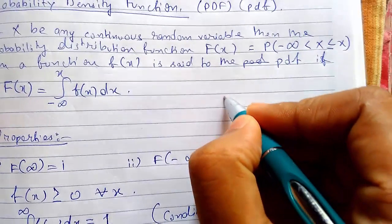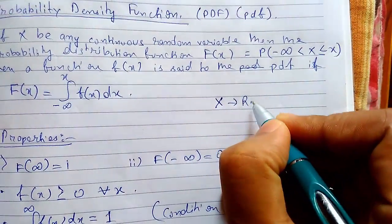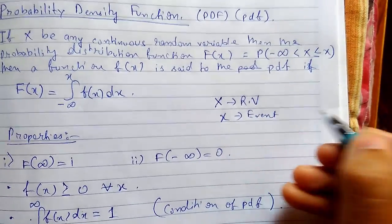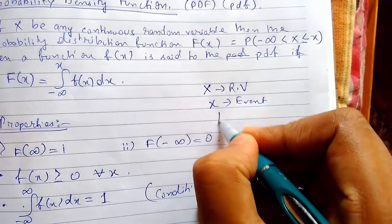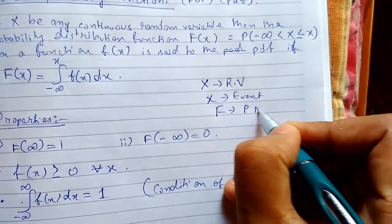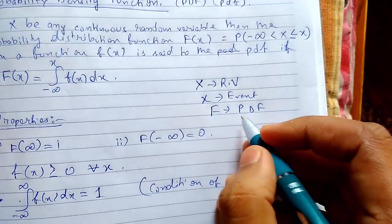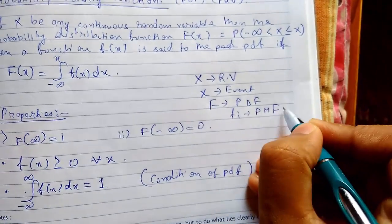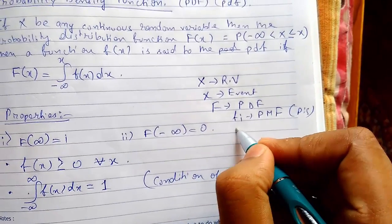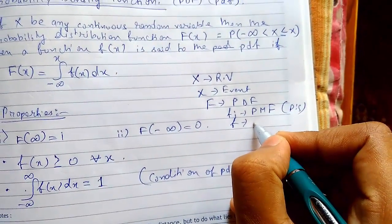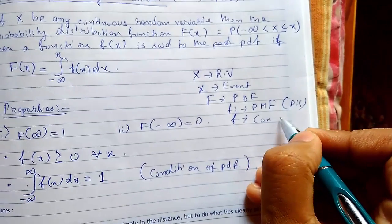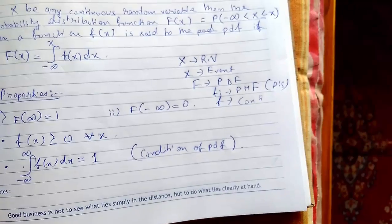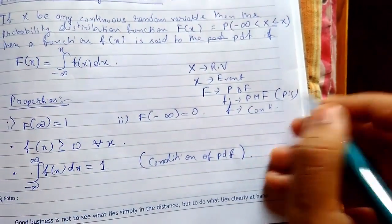So I will just define the terms. x was for random variable. We know that small x is for event or event point. Now capital F is probability distribution function and f_i was probability mass function. This is also a discrete variable. And f, only f, is for continuous, like probability mass function or continuous density function. So this is for continuous.